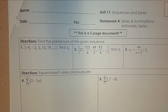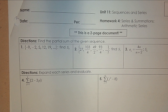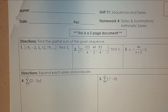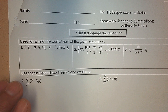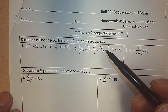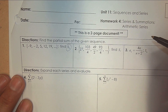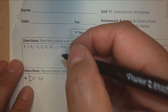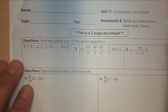Here's your homework for arithmetic series. A series means you're adding up the terms. A sequence — you just have each term with commas in between. It says find the partial sum of the given sequence. I want to find the first nine terms. What's the formula? What do I need to know? I need to know how many terms there are — there's nine.